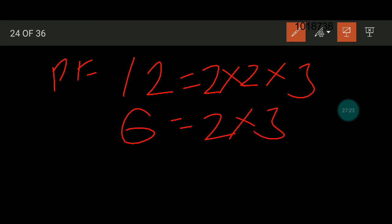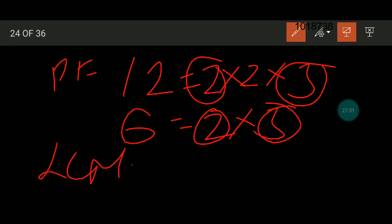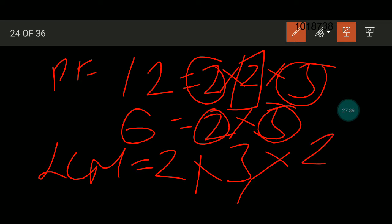Suppose we have 12 and 6. For 12, prime factors are 2, 2, and 3. For 6, prime factors are 2 and 3. The common one is 2 and 3. So LCM, we will write 2 and 3. Now we will write 2 once again. So 2 into 3 into 2 means 12. 12 here is the LCM.